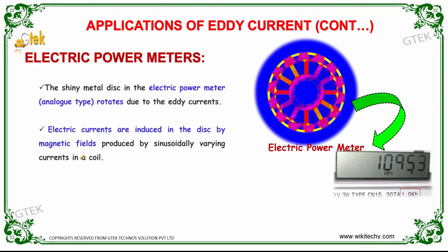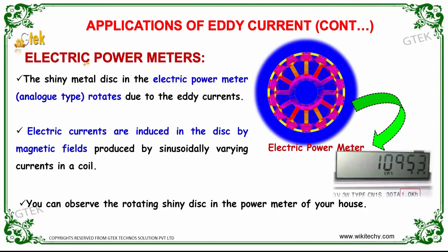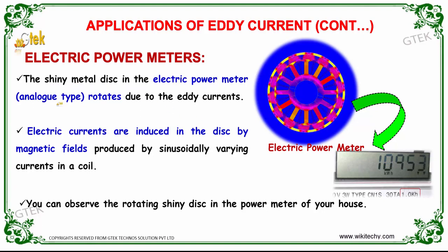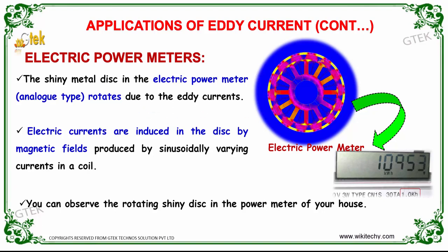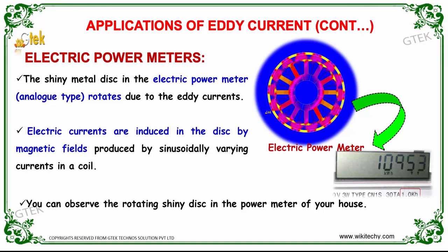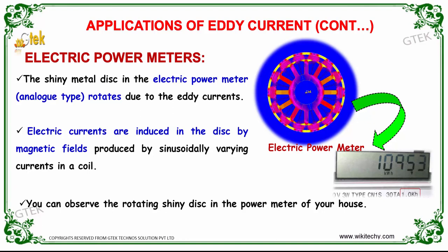Eddy current is also used in electrical power meters in houses. You can see the shiny metal disc in the analog electrical power meter — it rotates due to eddy current. The electrical currents are induced in the disc by magnetic fields produced by sinusoidally varying currents in a coil. You can observe the rotating shiny disc in the power meter of your house; it works under the principle of eddy current.